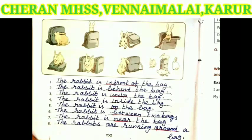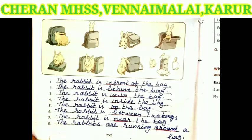Next, prepositions. Look at the picture and write eight sentences using prepositions. What is a preposition? A preposition is a word that is placed before a noun or pronoun to show its relationship to other words in a sentence. For example: the cat is under the table; the cat ran after the mouse. The book asks: where is the rabbit? First picture, the answer is: the rabbit is in front of the bag. Second one: the rabbit is behind the bag.